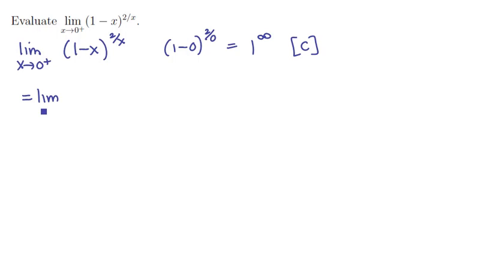That means we want to rewrite this using the exponential. So we have the limit as x tends to 0 of e to the ln of the base (1 minus x) times the power 2 over x. And since e is a continuous function, we can move the limit from downstairs up to the exponent.